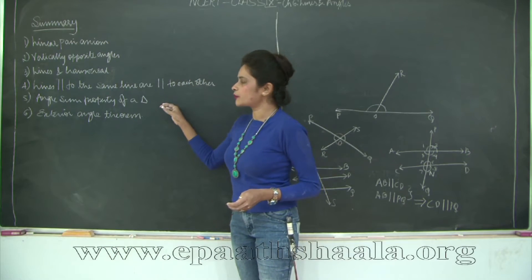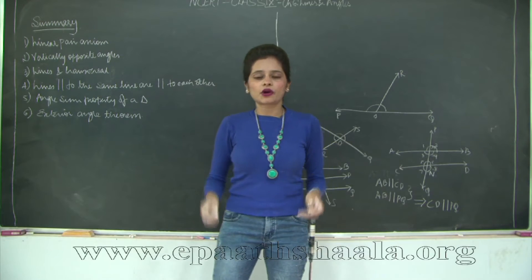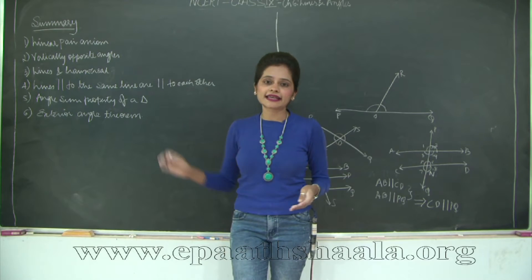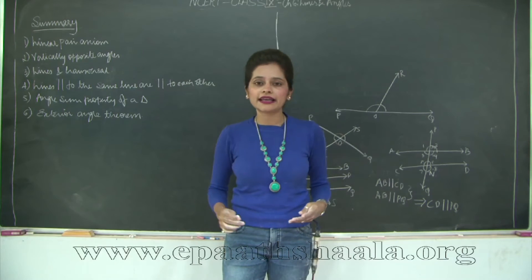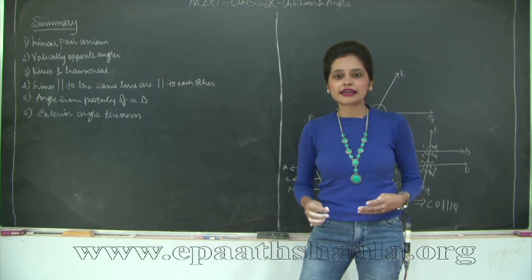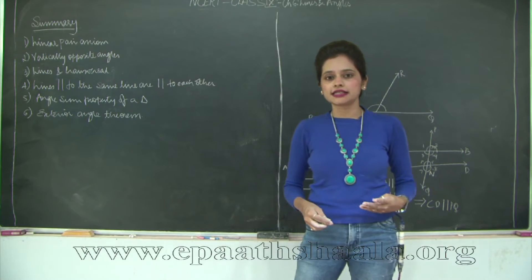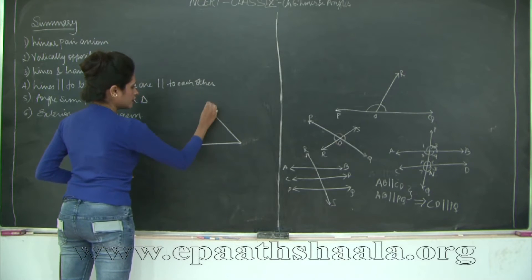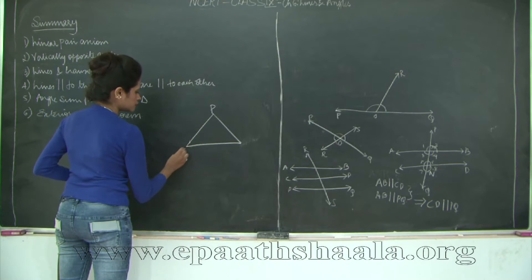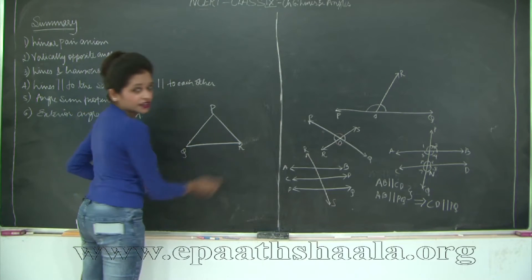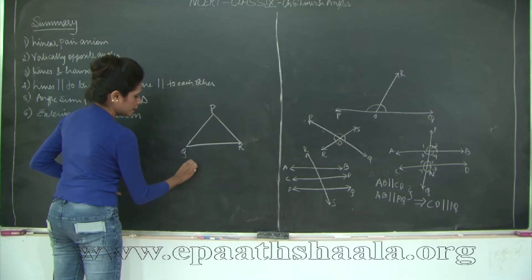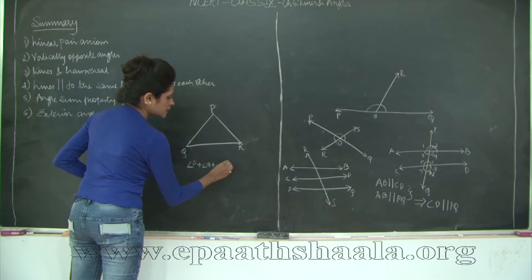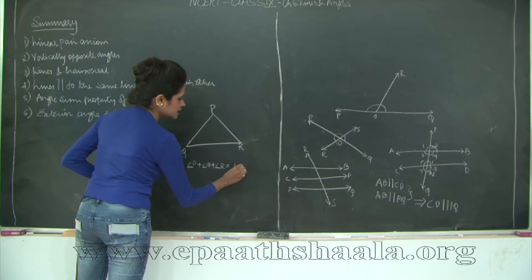Then we have the angle sum property of a triangle, which we learned in 8th class and proved here using the axioms and theorems about parallel lines. It states that the sum of angles of a triangle is 180 degrees: for triangle PQR, angle P plus angle Q plus angle R equals 180 degrees.